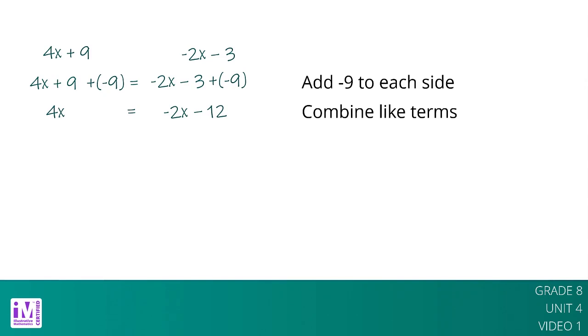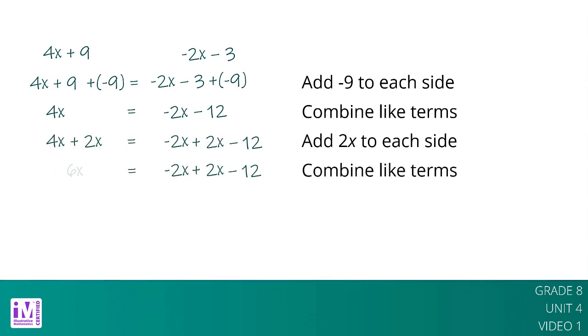Since expressions represent numbers, we can also add expressions to each side of the equation. For example, we can add 2x to each side and still maintain equality. 4x plus 2x is 6x and negative 2x plus 2x minus 12 is negative 12.